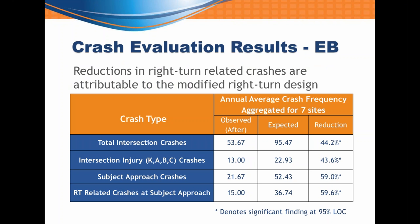Looking at the results: for our most targeted crash type, we had a 59.6% reduction. The expected is analogous to a before condition based on the EB method. We went from 36.74 crashes to 15 crashes. We had a very significant result there, as well as for the subject approach crashes. Just modifying the approach did have an impact overall on total intersection crashes and intersection injury crashes, and those findings are significant at the 95% level of confidence.